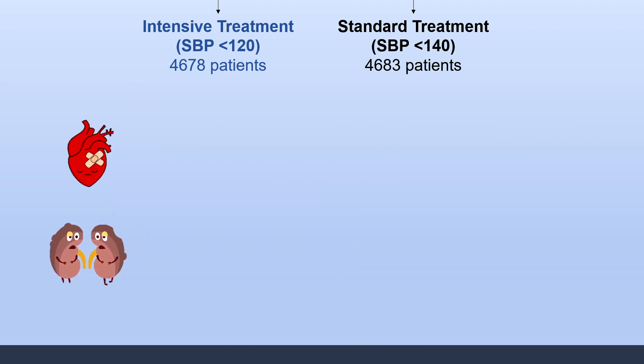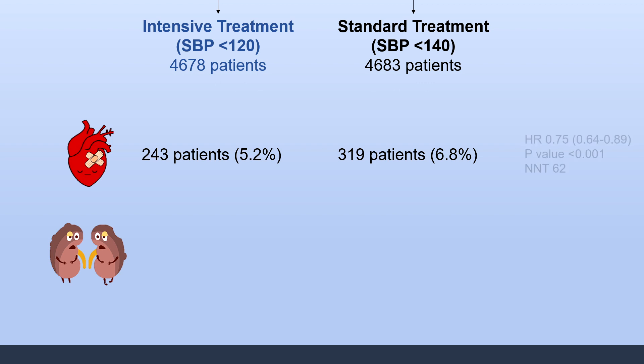The study's primary outcome was a composite cardiovascular outcome including the first occurrence of MI, ACS, stroke, heart failure, or death from a cardiovascular cause. In the intensive treatment group, 243 patients — 5.2% — reached this primary outcome, while in the standard treatment group 319 patients — 6.8% — reached it. This represents a hazard ratio of 0.75 with a p-value less than 0.001 and a number needed to treat of 62.